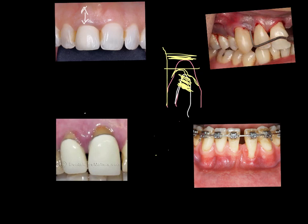Another indirect cause involves poor marginal fit, inadequate crown emergence angle, rough restorations, and overhang restorations. These lead to trapping of plaque in these areas, which can cause gingival inflammation if the patient is not meticulous with their oral hygiene, and subsequently leads to recession of the gingival tissue.